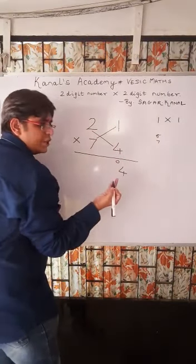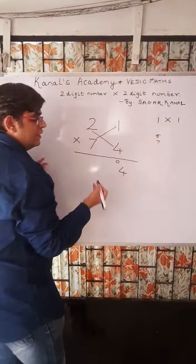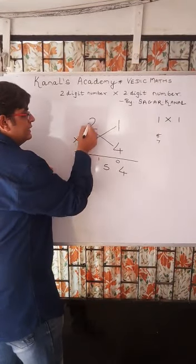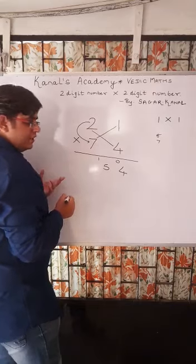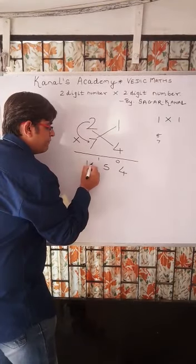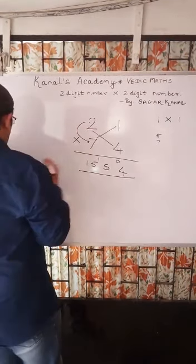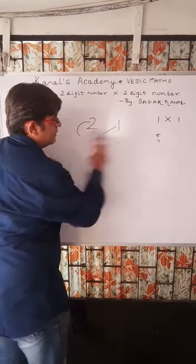Next step. 4 times 2 is 8. 7 times 1 is 7. 8 plus 7 is 15. 0 is carried. So, nothing to add there. 5, 1. 2 times 7 is 14. Plus 1, 15. Answer is 1554.